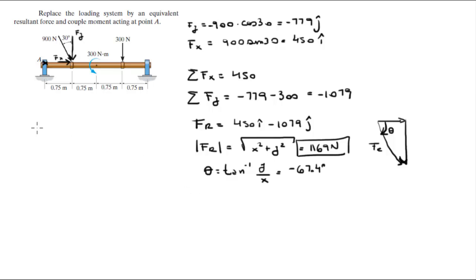So now we're going to calculate the sum of the moments today. Let's assume that going clockwise is positive. This 300 newton meter moment is going counterclockwise, so it's minus 300 newton meters.